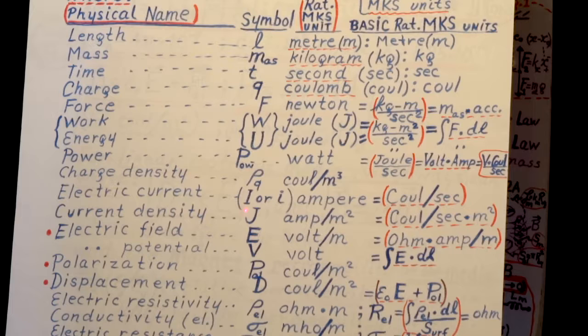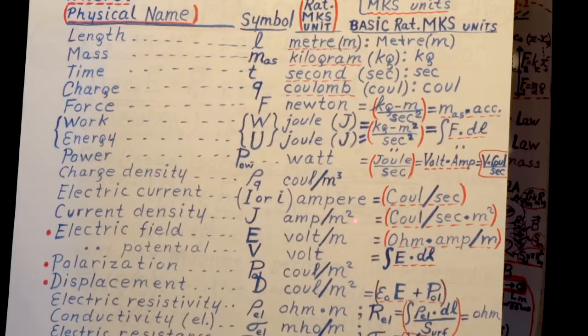Charge density in MKS system is Coulomb per cubic meter. Current in MKS system is Ampere. Current density, it's Ampere per square meter. It's a density. Electric field, Volt per meter.